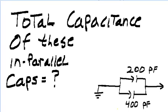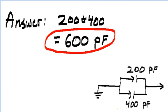Total capacitance of these in-parallel capacitors equals what? 200 picofarads plus 400 picofarads equals 600 picofarads.